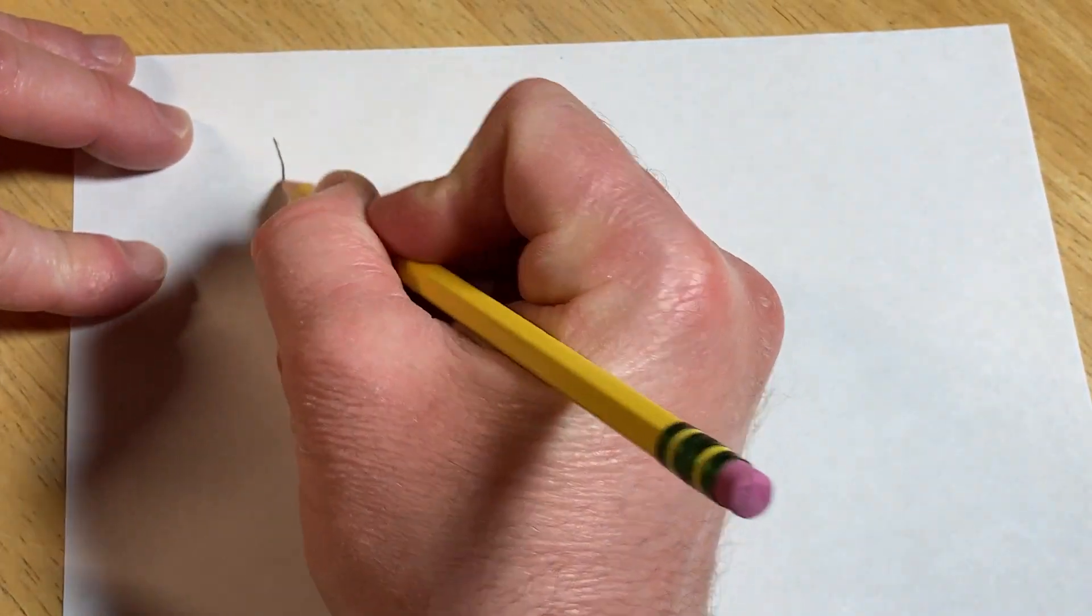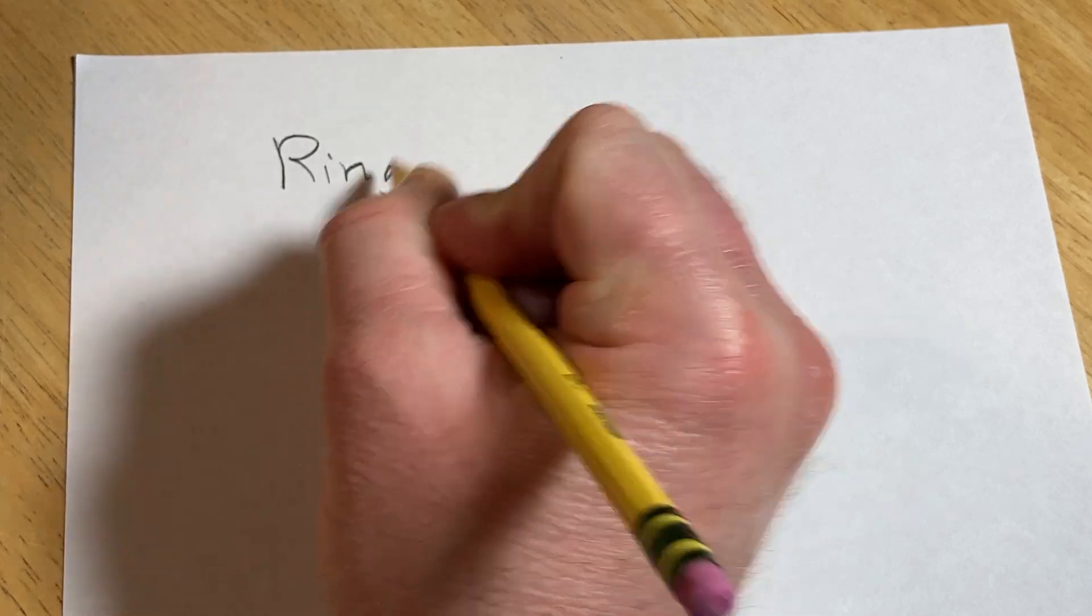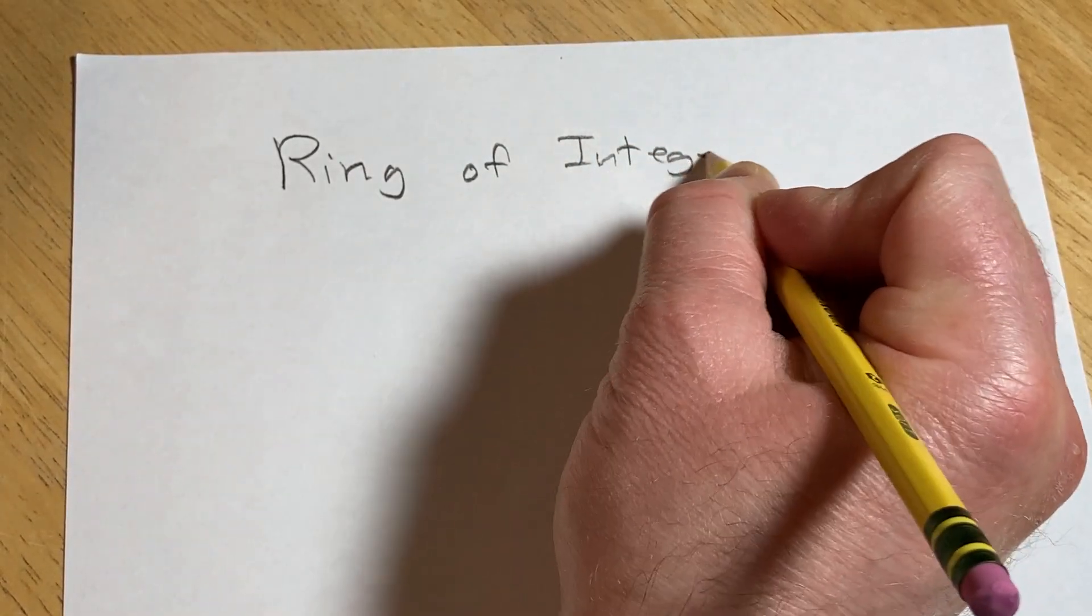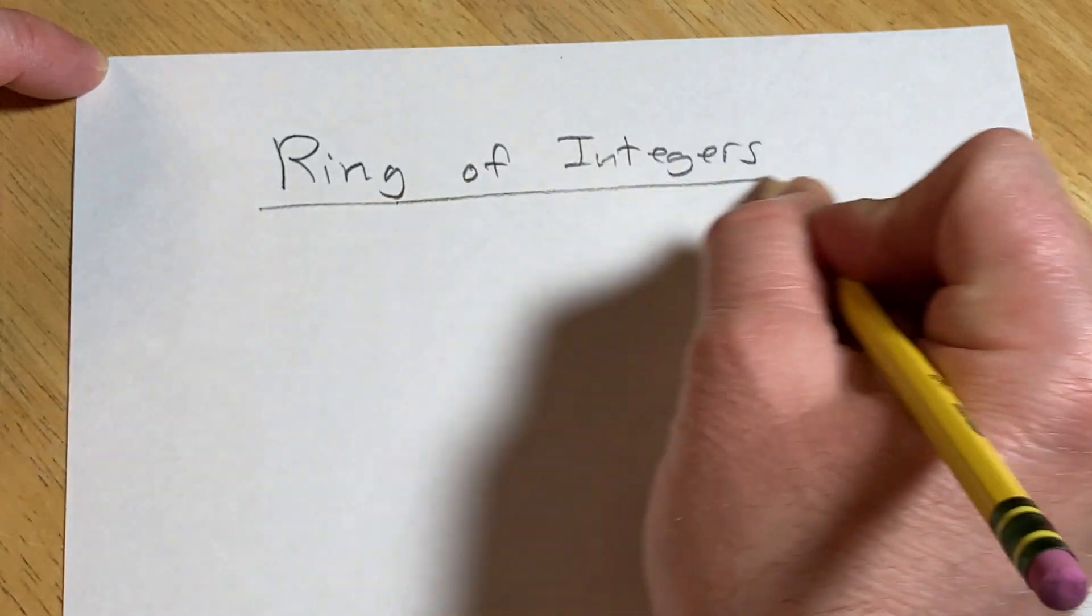Hello, in this video we are going to look at an example of a ring. We're going to look at the ring of integers, just really briefly explain what it is and talk about why it's a ring.